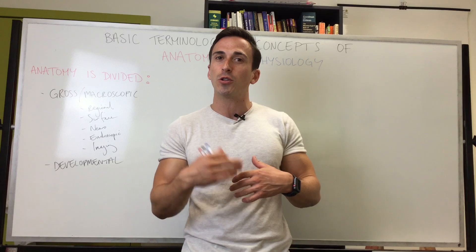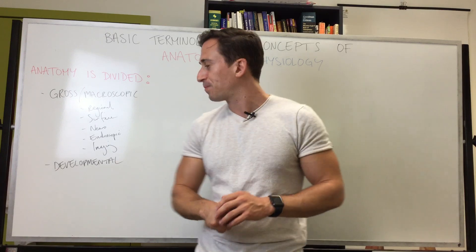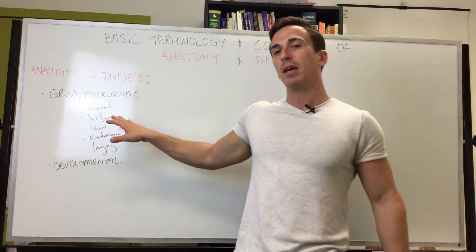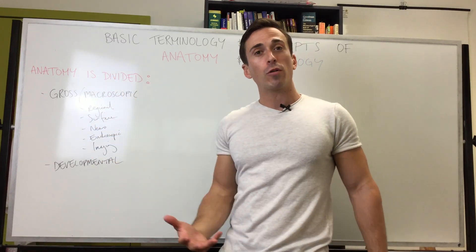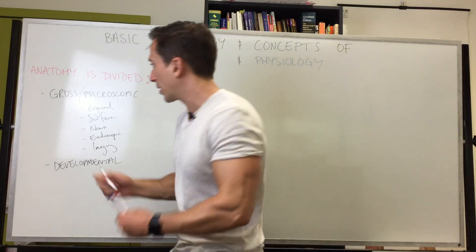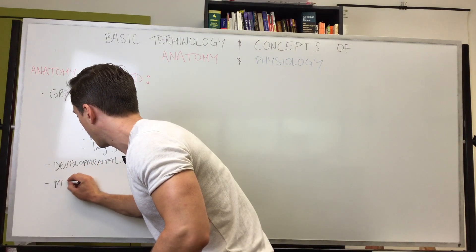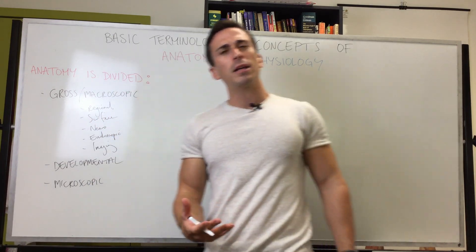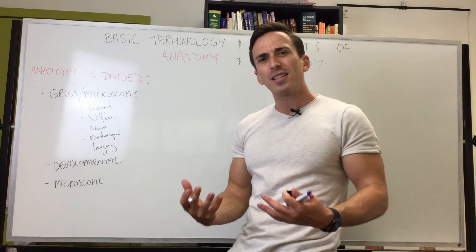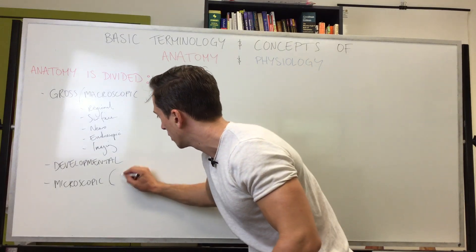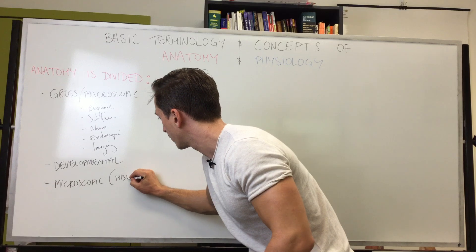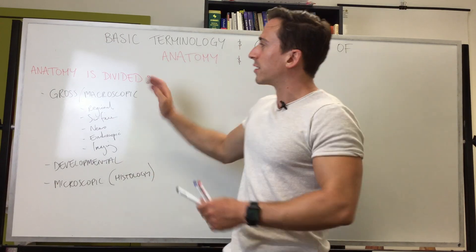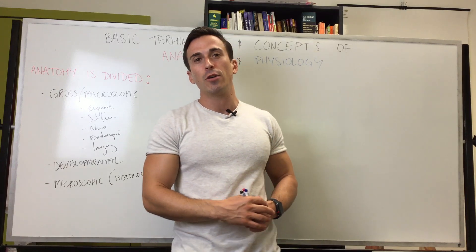In our lecture series, Dr. Matt Barton will be covering developmental anatomy. The final type of anatomy is microscopic or sub-microscopic anatomy. Microscopic anatomy is basically what we call histology — the study of cells and subcellular structures. Those are the basic divisions of anatomy that we'll be looking at in this lecture series.